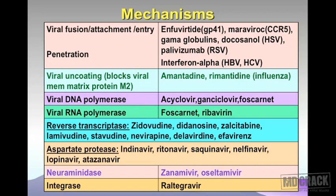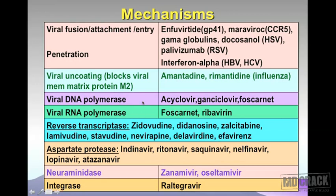Next is the action of viral DNA polymerase. Drugs which inhibit viral DNA polymerase are acyclovir, ganciclovir, and foscarnet. For viral RNA polymerase inhibitors, you have foscarnet again and ribavirin. Importantly, foscarnet appears in both rows — it is both a viral DNA polymerase inhibitor and a viral RNA polymerase inhibitor. You need to remember that foscarnet has both actions.